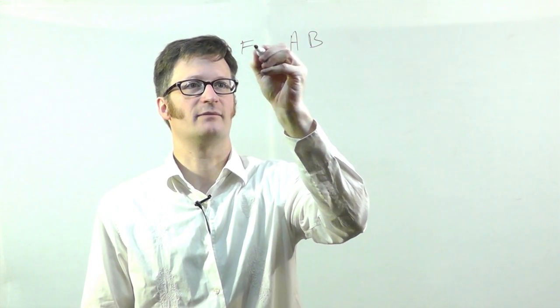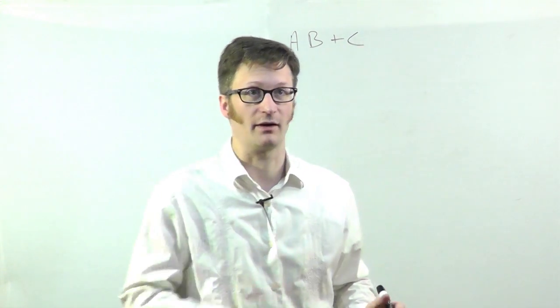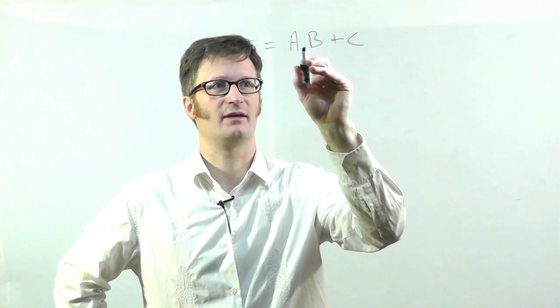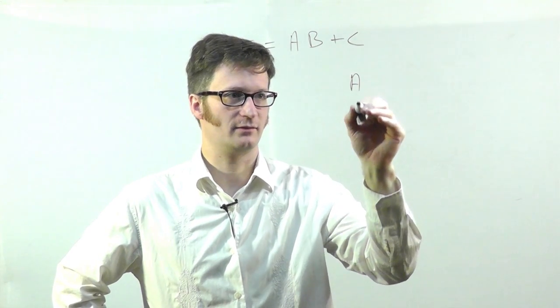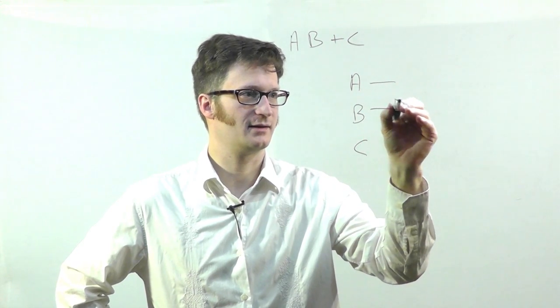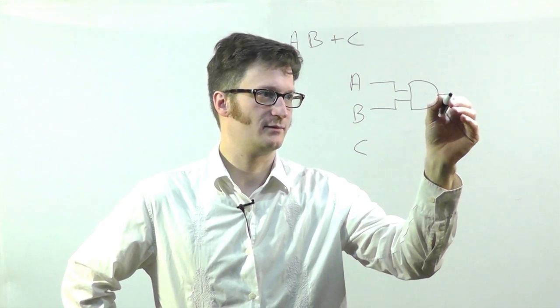Alright, let's take an expression and draw a circuit from it. So what if I have AB, this is my function, equals AB or C. Well if I look at it, the smallest grouping here is AB, which is A AND B. So I'll draw my inputs, and we have A and B.